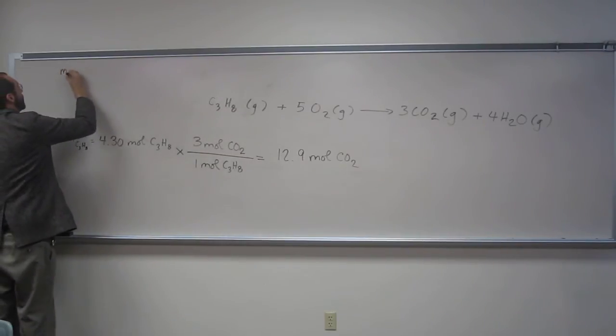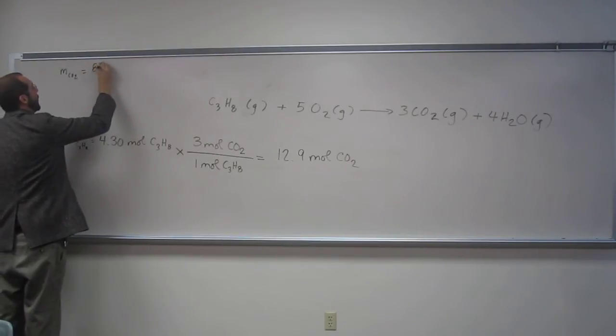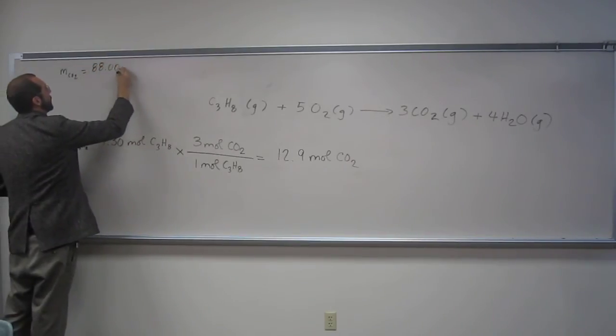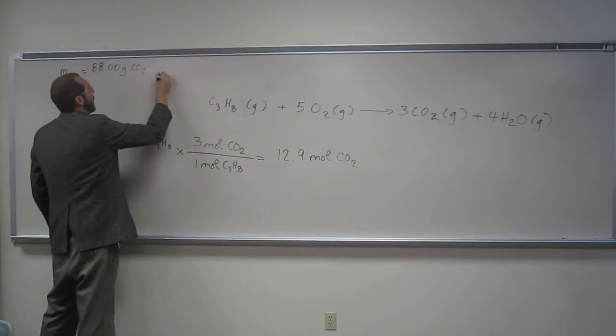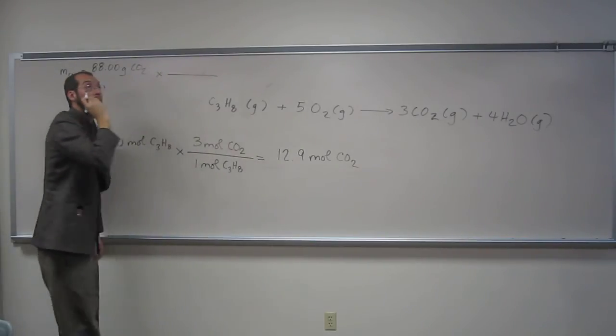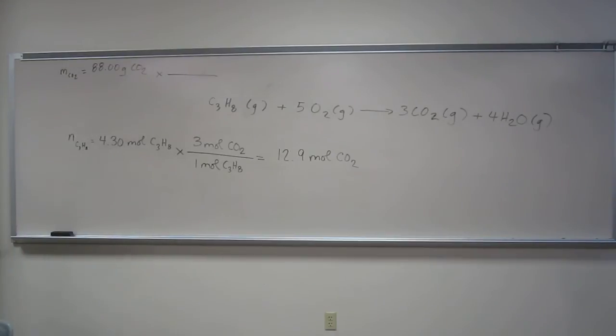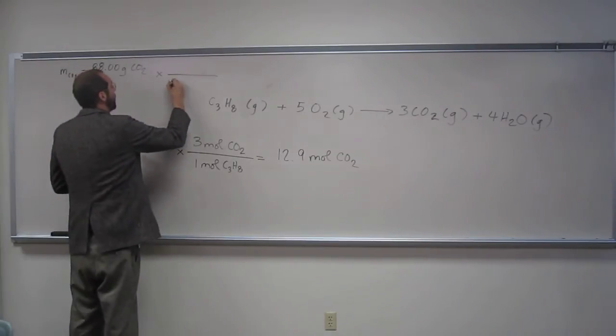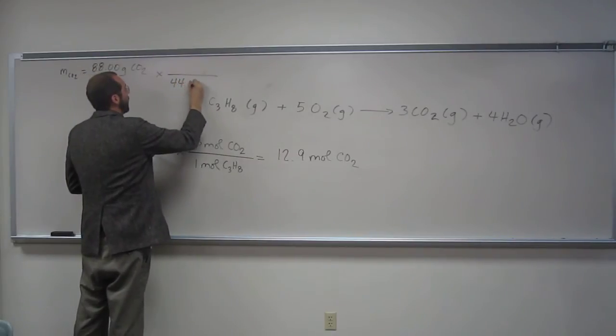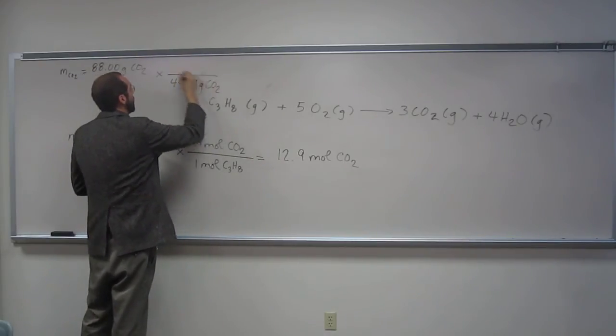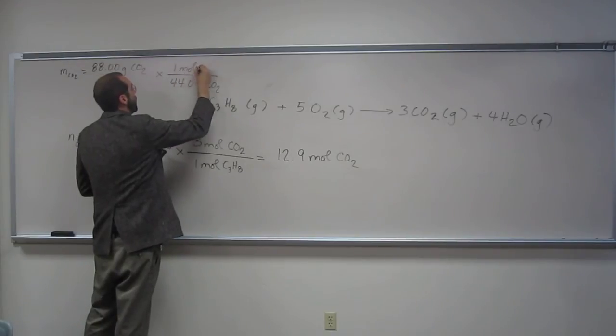The mass of carbon dioxide was 88.00 grams of carbon dioxide. And we know that carbon dioxide, if we figure out its molar mass, 12.01 plus 2 times 16, equals 44.01 grams of carbon dioxide per 1 mole of carbon dioxide.